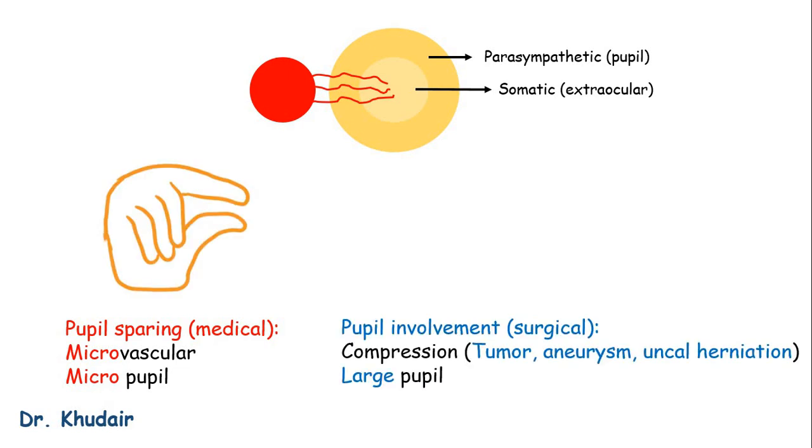On the other hand, if the damage is caused by compression by a tumor, a posterior communicating artery aneurysm, or an uncal herniation.